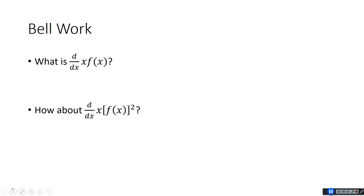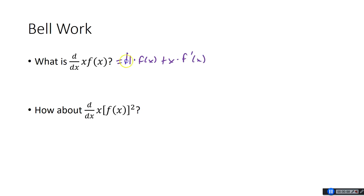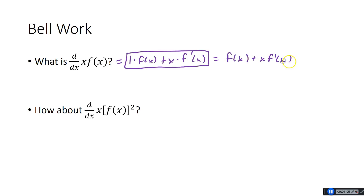The first one: derivative of x·f(x). It definitely needs product rule. We do the derivative of one and leave the other alone. So one times f(x), because the derivative of x is just one, plus leave x alone and take the derivative of f(x), which is f prime of x. You could write that as f(x) plus x·f prime(x). The one doesn't have to be there if you don't want it.